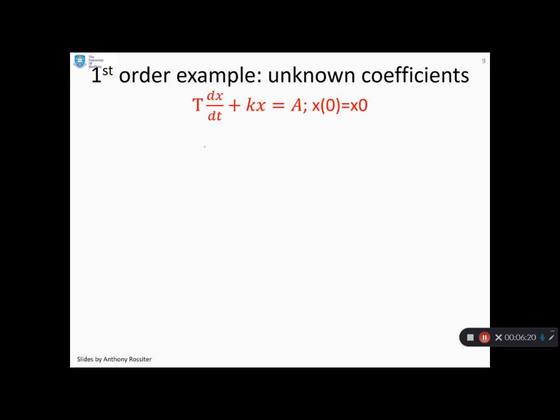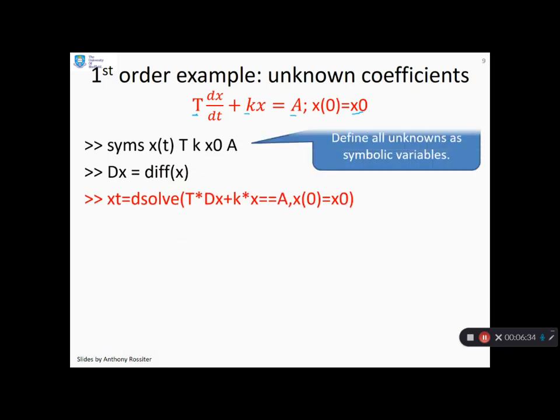What about if there are some coefficients you don't know? So here you'll see I don't know capital T, I don't know k, I don't know a and I don't know x of 0. So how could you use MATLAB to solve this? Well, all you've got to do is define all your unknowns as symbolic variables. So here you'll see with the sym statement I've got my x of t, I've got my capital T, I've got my k, my x of 0 and my a. I just define them all as symbolic variables and then put those symbolic variables into the dsolve statement. Exactly in the positions you would expect. Oh, there's a typo there. I've forgotten the equals equals. Something to remember.